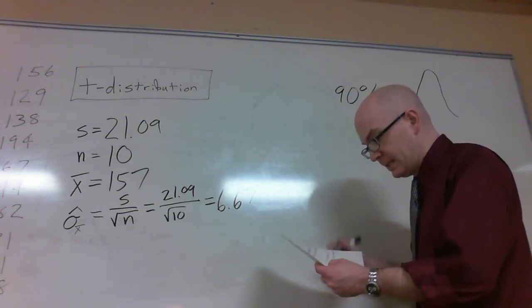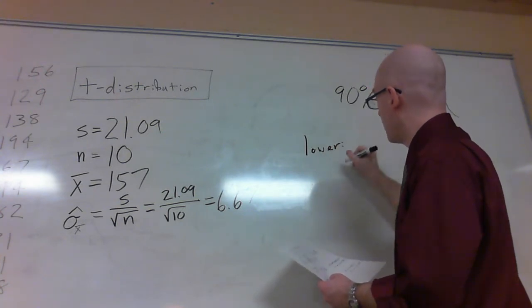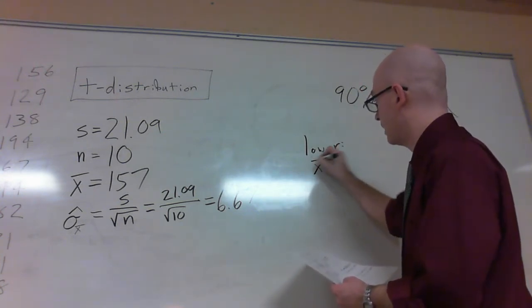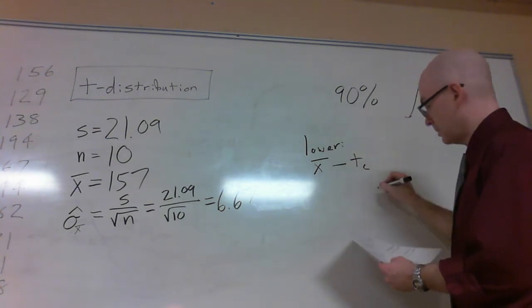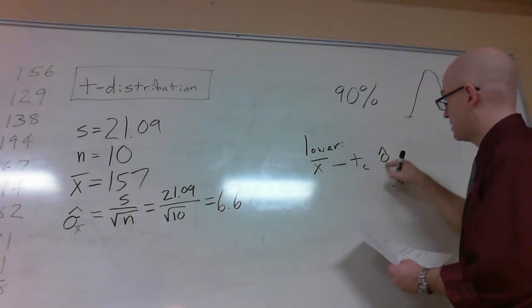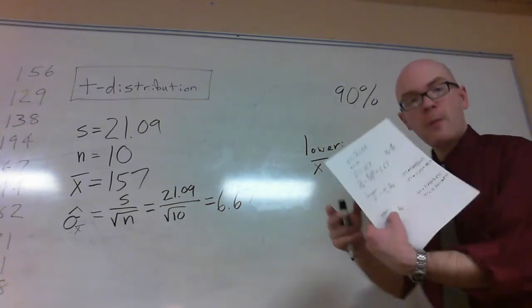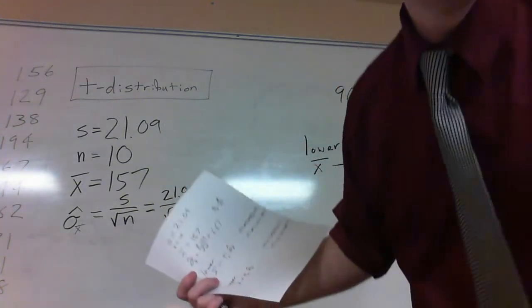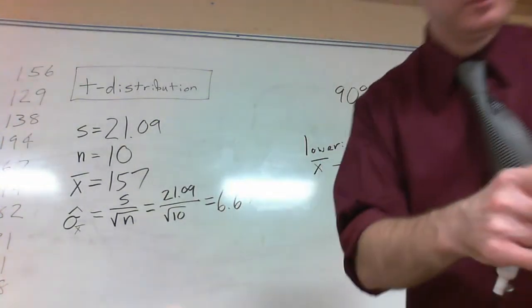So I've got a lower bound here. And my lower bound is simply going to be x-bar minus t with my confidence level and then my standard error, sigma with a little hat of x-bar. Now this I get from my t-table.